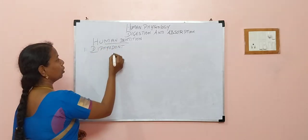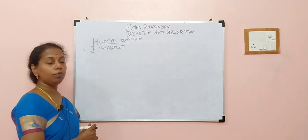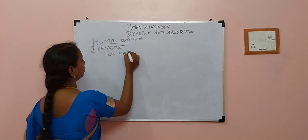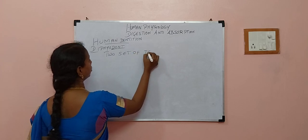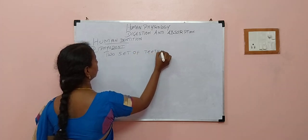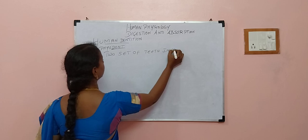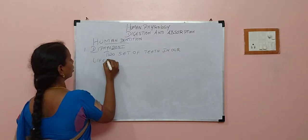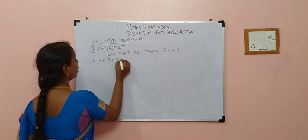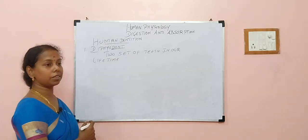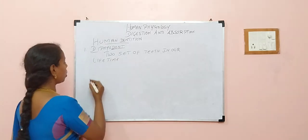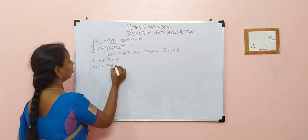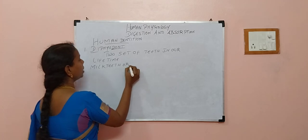So 'di' means two, 'dont' means dentition. We have two sets of teeth in our lifetime. The first set of teeth is what you form at six months as a baby — that is called milk teeth, or deciduous teeth.